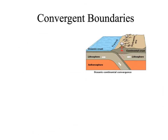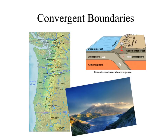The next convergent boundary type is oceanic-continental convergence. Oceanic crust made of basalt is more dense than the granitic crust of the continents, so the continental crust stays on top and the oceanic crust dives underneath. Again, we get a trench, and volcanic mountains also form. A great example is the Cascade mountain range running through Washington and Oregon. One of the most famous volcanoes in North America is Mount St. Helens, part of the Cascade range along with Mount Rainier.